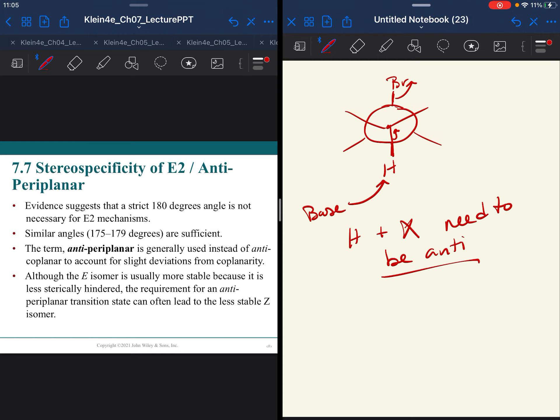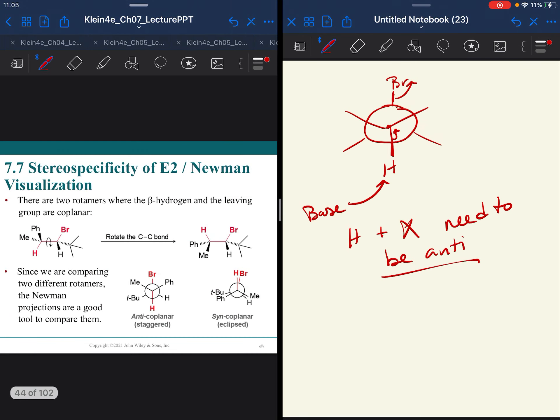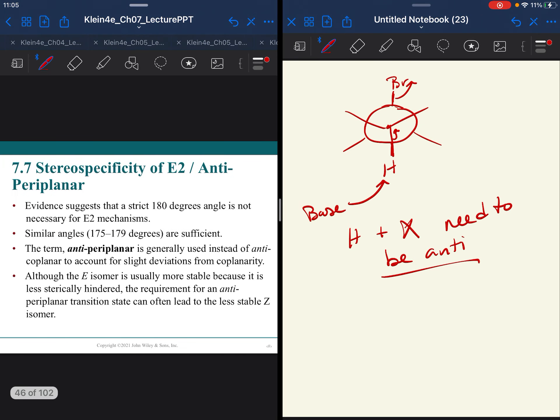And the reason for that is they need to be planar so that those P orbitals can line up and you can make your double bond. You get that overlap, that overlapping pi bond. This can be tough to consider when you have single bonds that can fully rotate. But it is easier to see when you are looking at a ring.